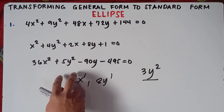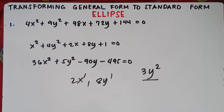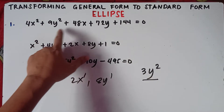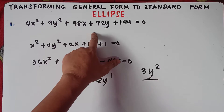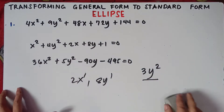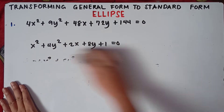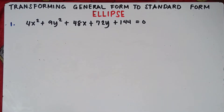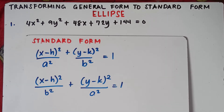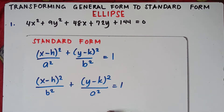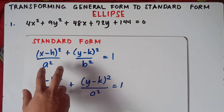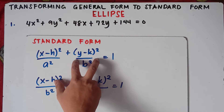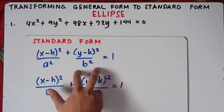So feel free to see the link in the description down below on how to solve this part 3, question number 3. This will be part 3 of our video class. So let's focus on this question class: 4x squared plus 9y squared plus 48x plus 72y plus 144 equals 0. Now before that, we need to know the standard form of the ellipse. So this will be the standard form. We transform this general form into this form.